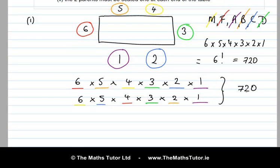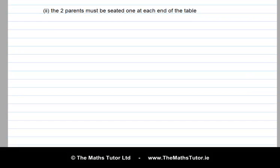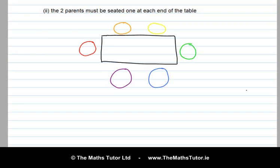Let's look at the second scenario. So in part two, the two parents must be seated one at each end of the table. So let's draw the diagram again. We've got mother, father, and four children. We're going to call them A, B, C, and D.